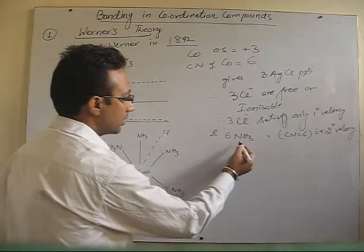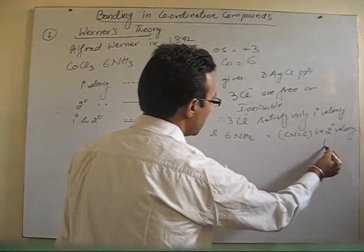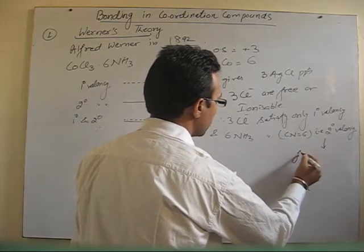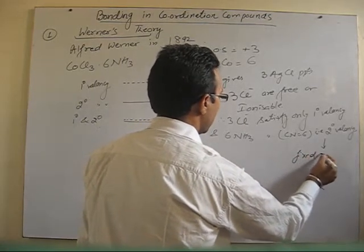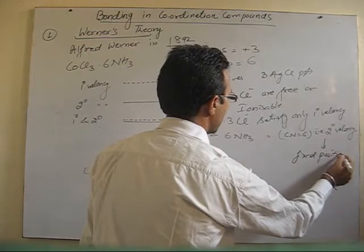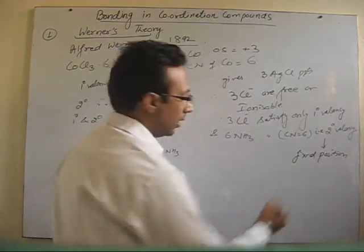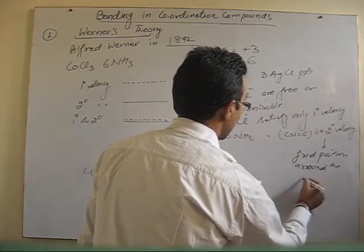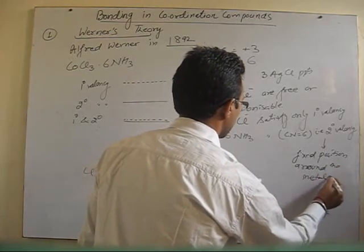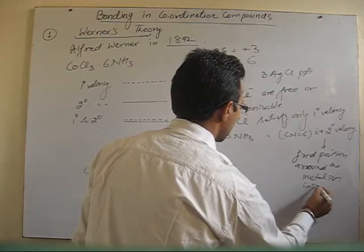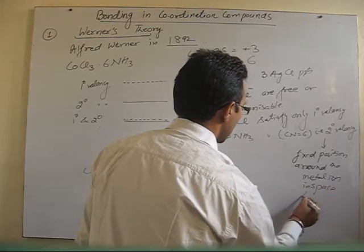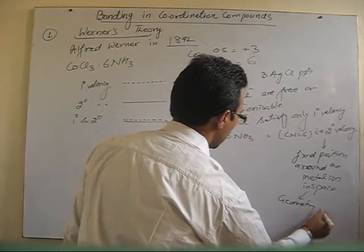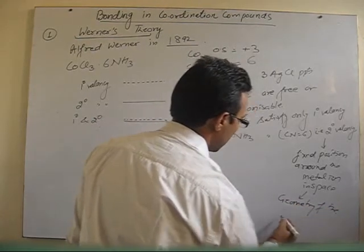According to Werner, these species satisfying secondary valency have a fixed position around the metal ion in space. That means this will give rise to the geometry of the compound.